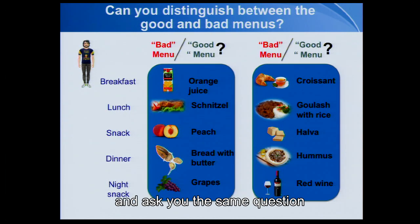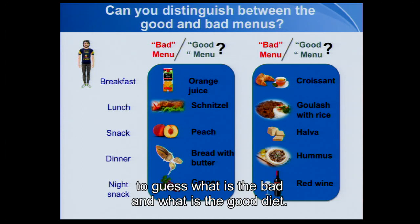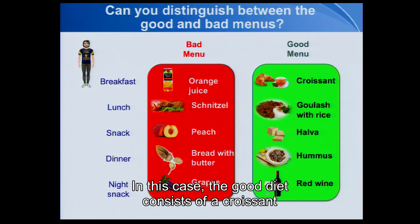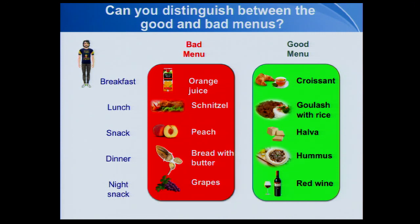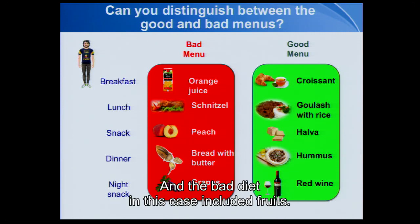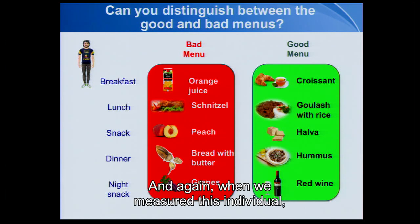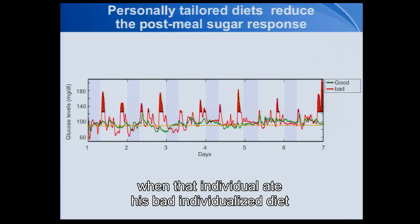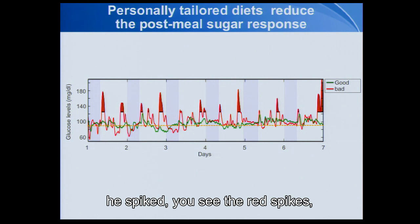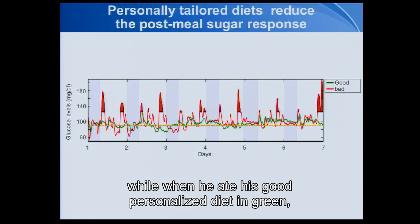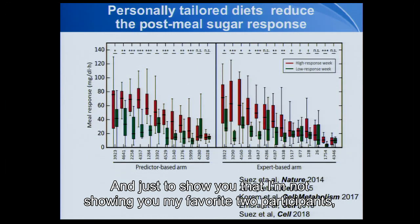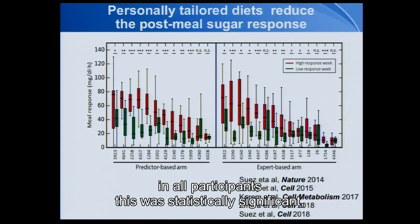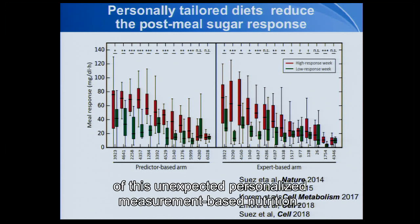If I show you a different participant and ask the same question, you would find it equally difficult to guess what is the bad and what is the good diet. In this case, the good diet consists of a croissant and beef, halva, and hummus — the world's best food. And the bad diet in this case included fruits, so you would never be able to guess without measuring. When that individual ate his bad individualized diet, he spiked — you see the red spikes. When he ate his good personalized diet in green, he normalized his pre-diabetic levels already within one week of intervention. And in all participants, this improvement was statistically significant after a single week of this unexpected personalized measurement-based nutrition.